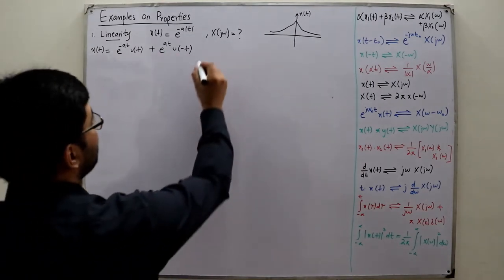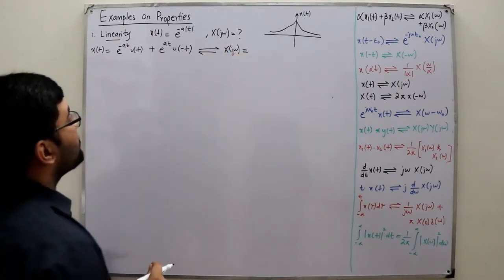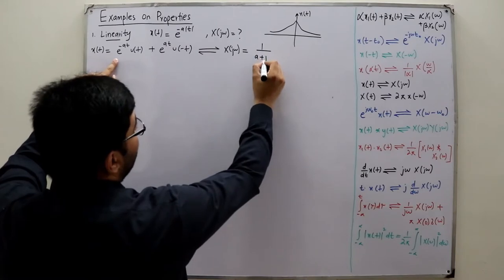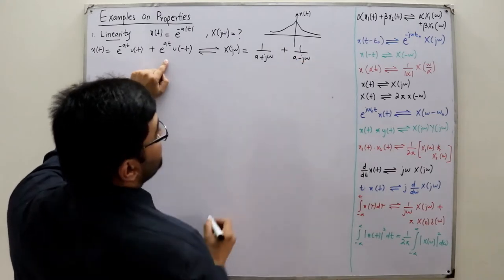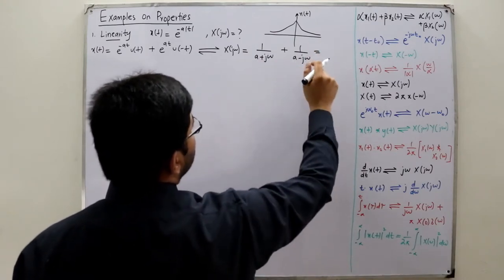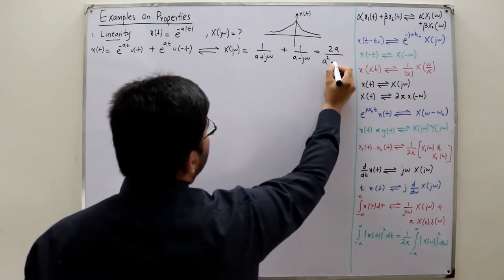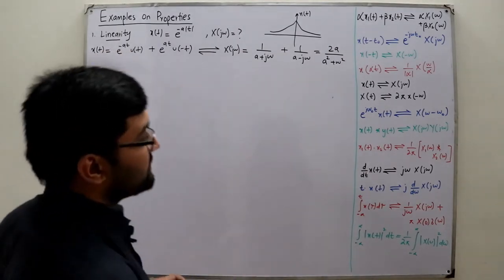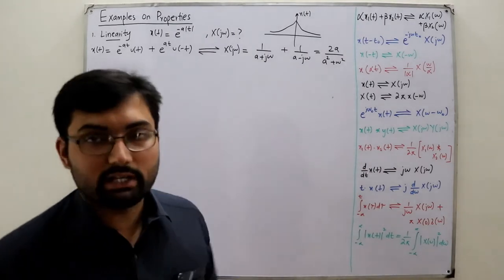Now what is the corresponding Fourier transform? X(jω) is the linear combination of the two individual Fourier transforms. We know the Fourier transform of e^(-at)u(t) is 1/(a + jω), and of e^(at)u(-t) is 1/(a - jω). Adding them: (a - jω + a + jω) over (a² + ω²), the jω terms cancel, giving 2a/(a² + ω²). You can also verify this using the Fourier transform formula directly.